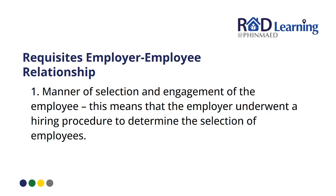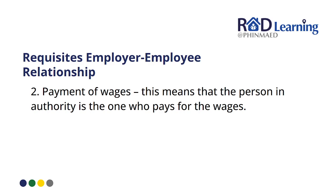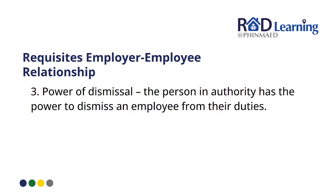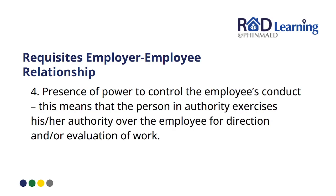The requisites of an employer-employee relationship are: first, the manner of selection and engagement of the employee — meaning the person in authority conducted a hiring procedure to determine the selection of employees. Second, the payment of wages — the employer or person in authority is the one who pays the wages. Third, the power of dismissal — the employer has the power to dismiss an employee for their duties. Fourth, the presence of the power to control the employee's conduct — the employer exercises authority over the employee for direction and evaluation of work. These four requisites make up the employer-employee relationship; without one, you cannot consider someone an employee of a given employer.